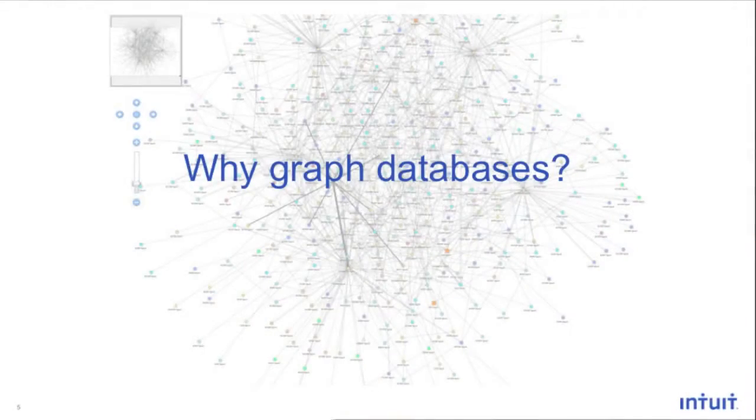Why graph databases? Financial transactions are semi-structured, hierarchical data, and a relationship exists between consumers and merchants when they perform a financial transaction. In order to better represent and understand these relationships, graph databases are one of the most effective approaches, as relationships are first-class citizens in graph databases. For example, if a user shops at Costco, Walmart, or Target, there is a relationship between the user and the merchant that can be represented very well in a graph database.